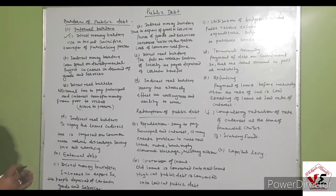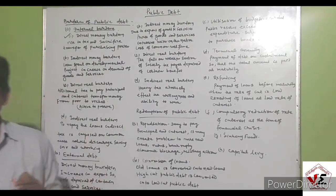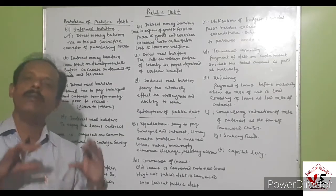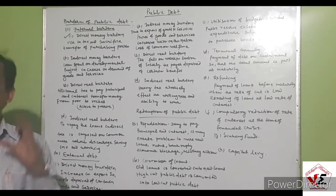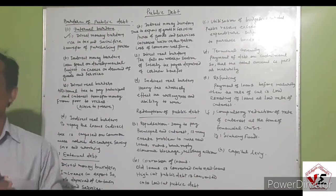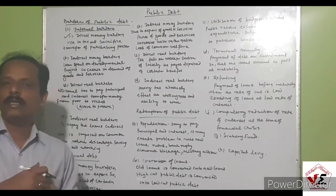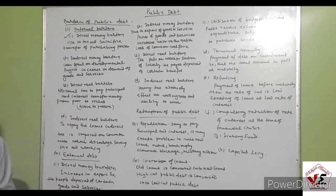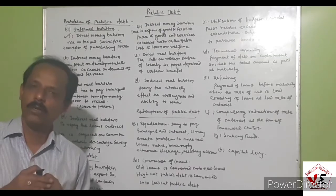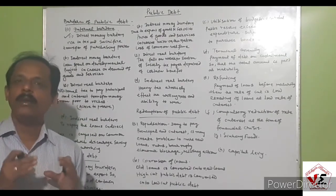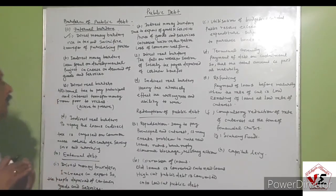For indirect money burden: if the loan is used for developmental purposes — such as making bridges or industrialization — the demand of the people and their extra purchasing power will increase. However, the value of goods and services will also increase in the economy, which will cause a shortfall in the real income of the people relative to their expenditure. That is the indirect money burden.